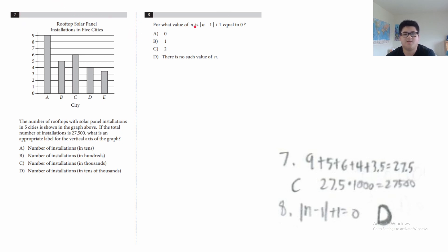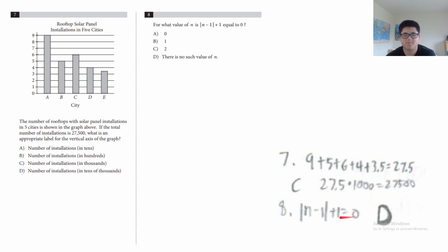Question 8: for what value of n is |n−1| + 1 = 0? If you subtract 1 from both sides, you get |n−1| = −1. The absolute value of anything must be non-negative, so you can't get −1 from an absolute value. There is no such value of n. The answer is D.